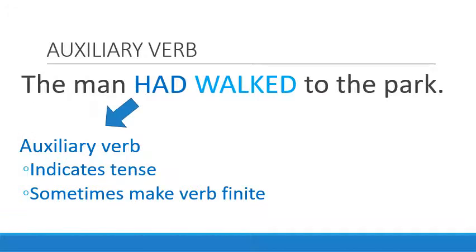Another type of verb we want to speak about is something called an auxiliary verb. This is a verb that helps to complete or indicate the tense of a word. For example, 'the man had walked' — the word 'had' indicates the completeness of the action and also can indicate the tense.